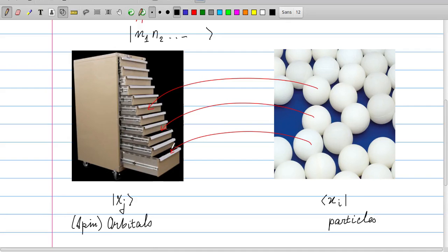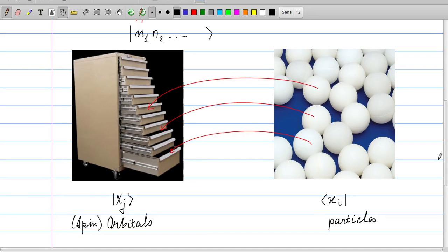We can do this for any drawer. In this case, we have put a particle in drawer one, a particle in drawer number three, this is four, five, six, etc. We can carry on like this.